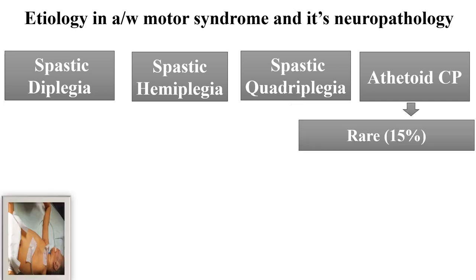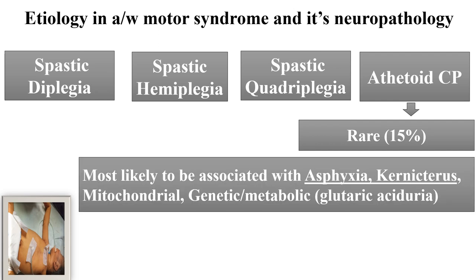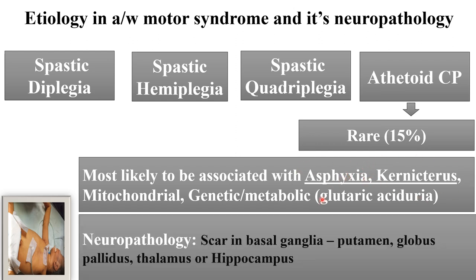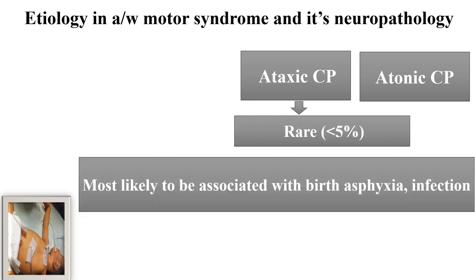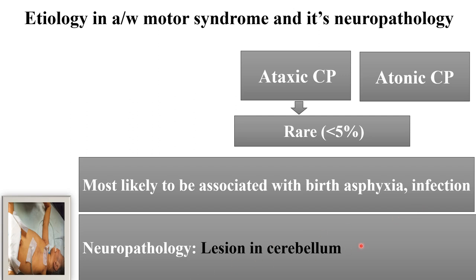Athetoid CP is present in around 15% of cases. It is comparatively rare compared to spastic CP and is most likely associated with asphyxia and kernicterus due to hyperbilirubinemia in the neonatal period. Mitochondrial disorders and metabolic disorders such as glutaric aciduria can also present as athetoid CP. In neuropathology, damage in the basal ganglia — putamen, globus pallidus, thalamus, or hippocampus — occurs. Ataxic CP is rare, present in less than 5% of cases, associated with birth asphyxia and infection; the lesion is in the cerebellum.